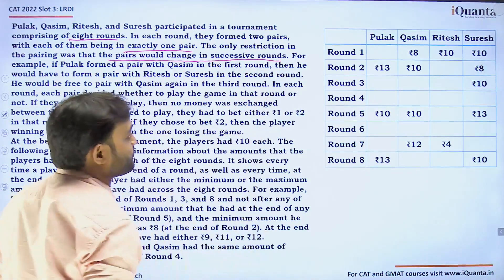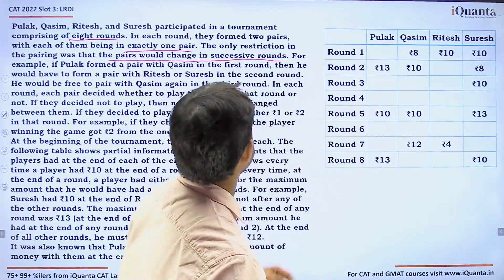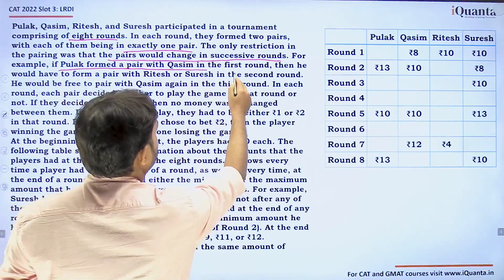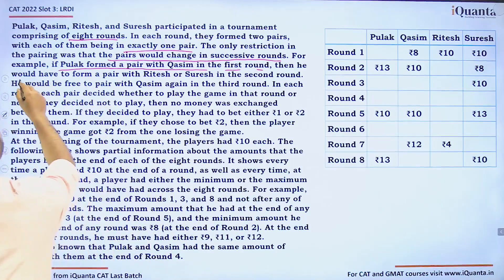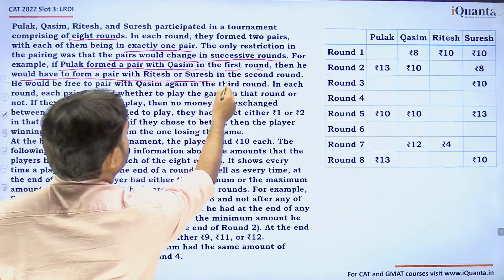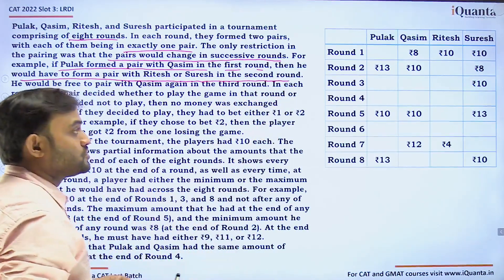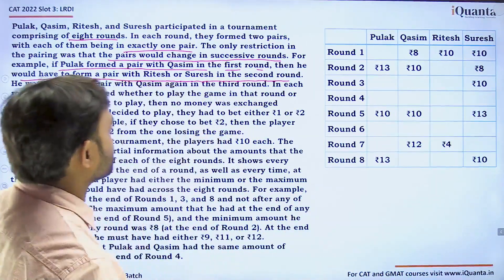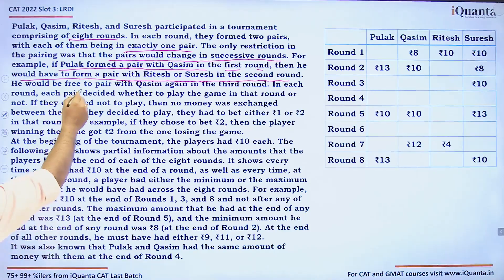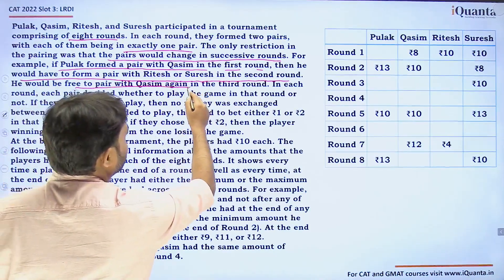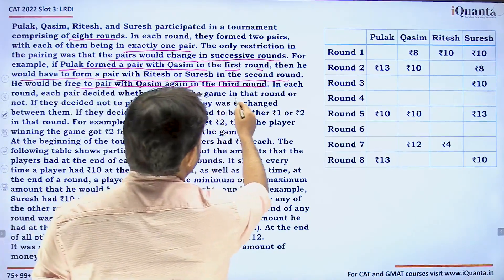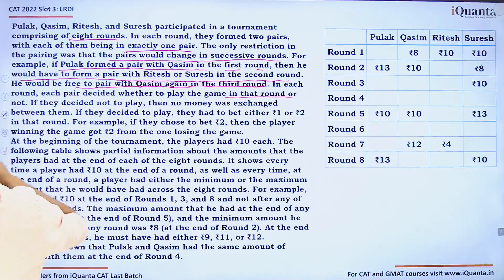The pairing would change in successive rounds. For example, if Pulak formed a pair with Kasim in the first round, then in the second round he would have to form a pair with Ritesh or Suresh — not the same pair playing two consecutive rounds. However, he would be free to pair with Kasim again in the third round.